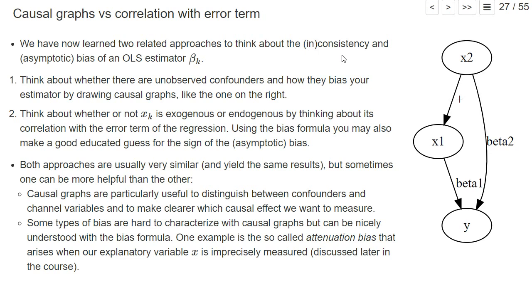The first approach, which we already started in chapter one, was basically to think about whether there are some unobserved confounders and how they bias your estimator by drawing a causal graph. For example, in our simulation we could draw this graph.